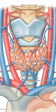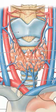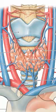Isthmus of the thyroid gland. Left lobe of thyroid gland. Cricoid cartilage of larynx. Internal jugular vein. Superior thyroid artery.